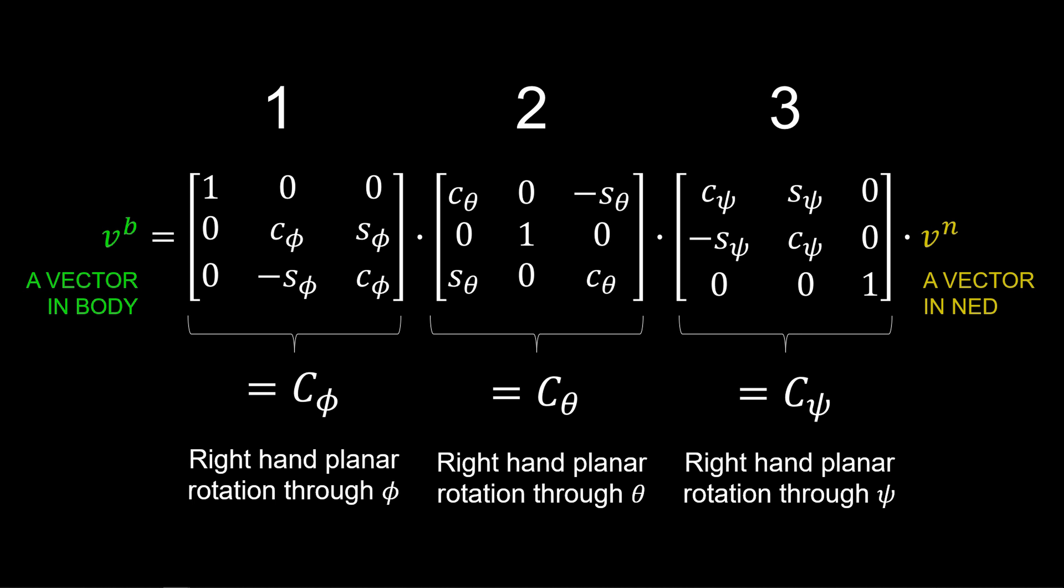Note, the order of the rotations that transform a vector in NED to body is 3, 2, and 1. Since matrix multiplication does not commute, it's important that we establish a convention and stick to it. And for aircraft modeling and simulation, that order is 3, 2, 1.